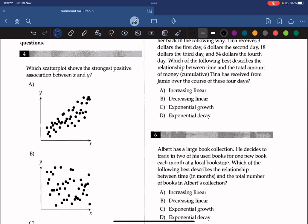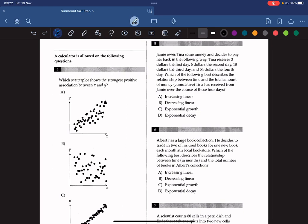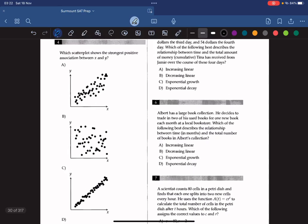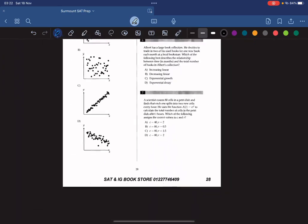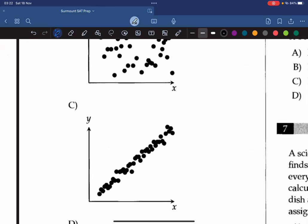Question 4. Which scatter plot shows the strongest positive association between X and Y? To find what's the strongest, you need to find something that's as close to a straight line as possible. And here, in this case, it's evidently C.